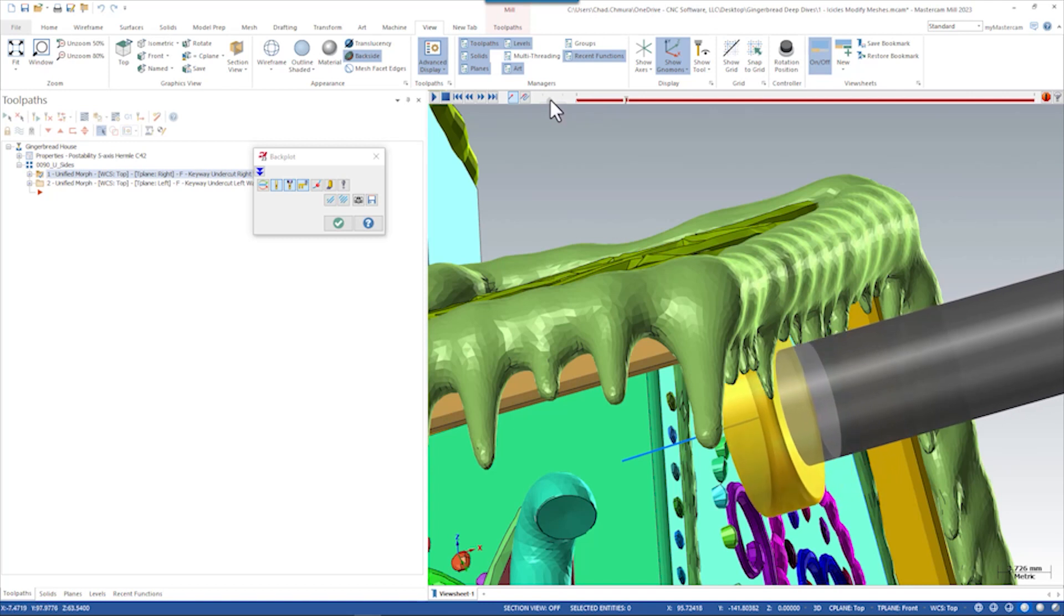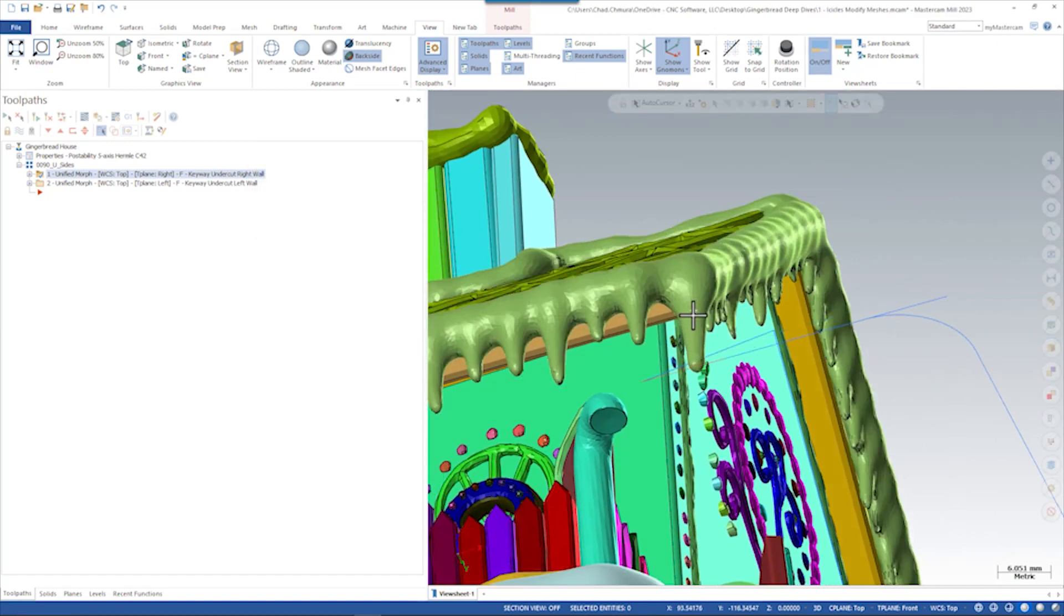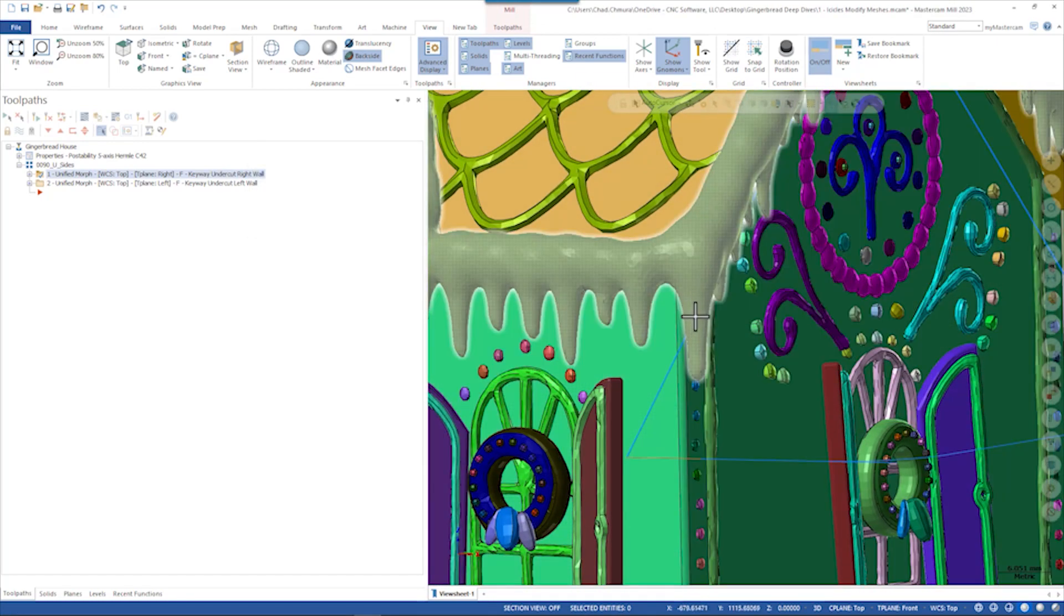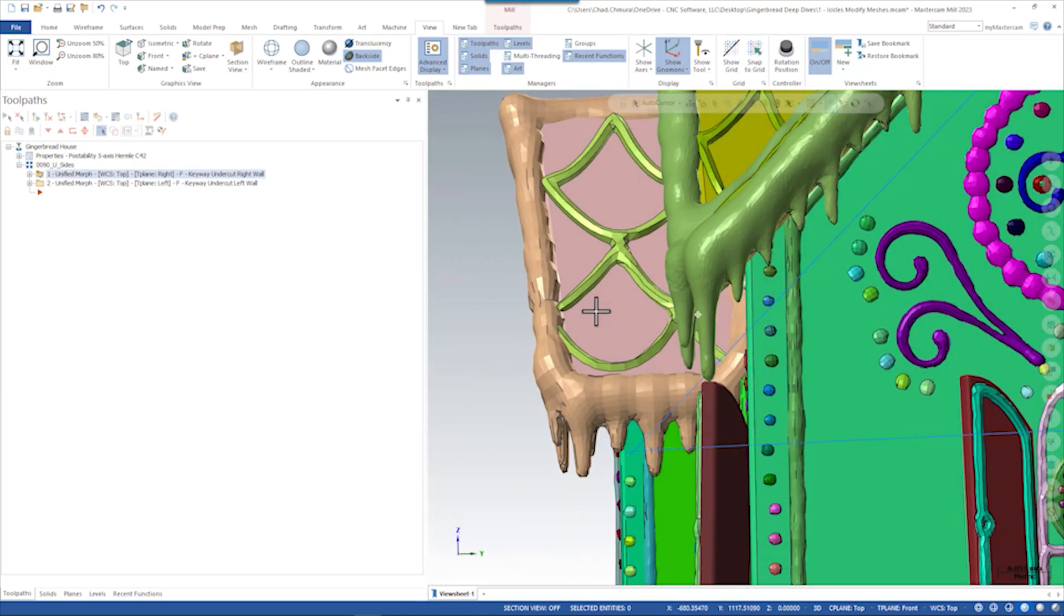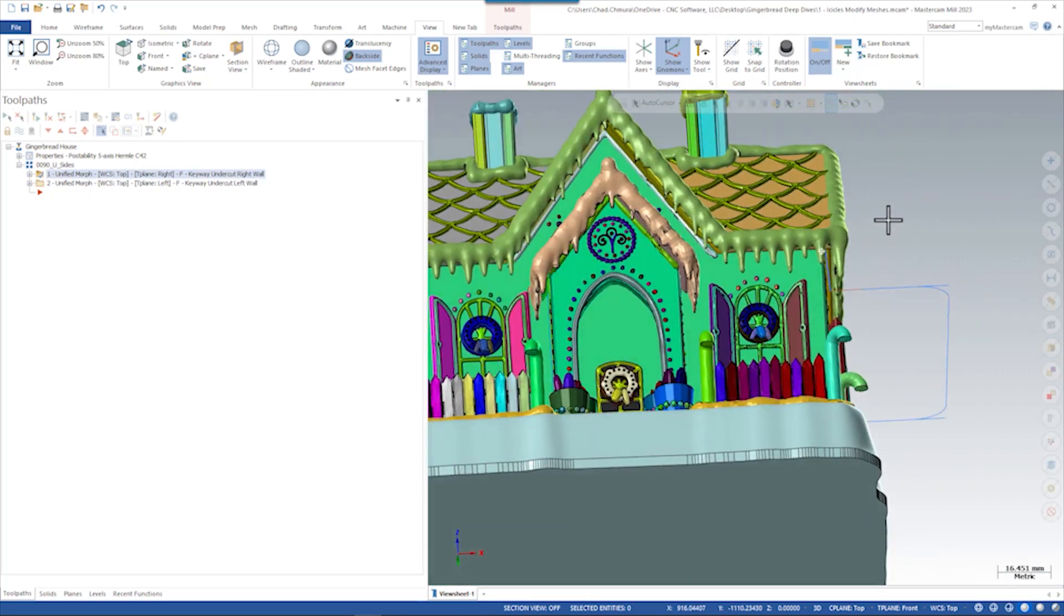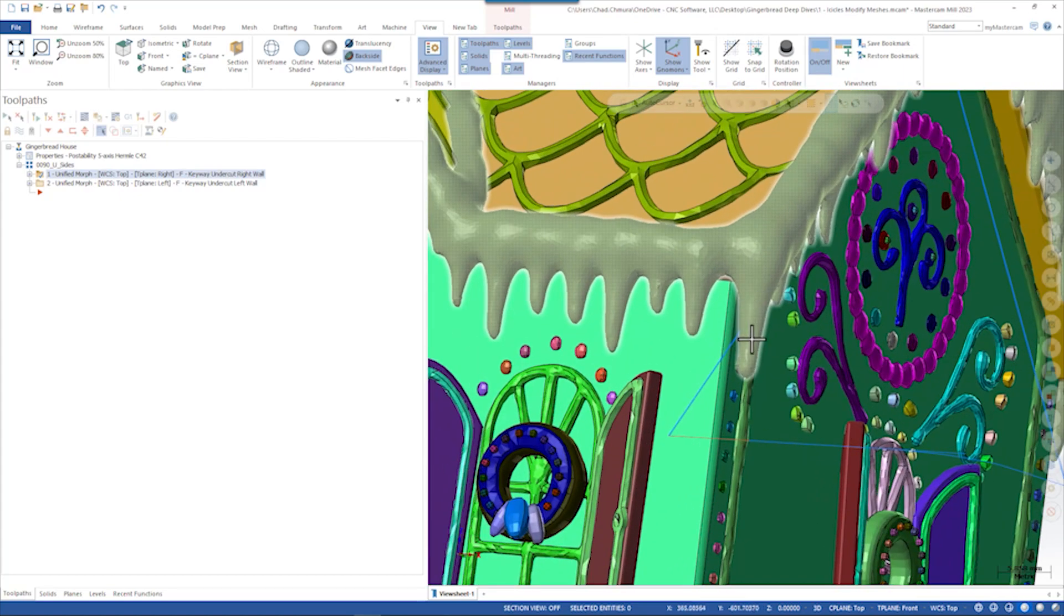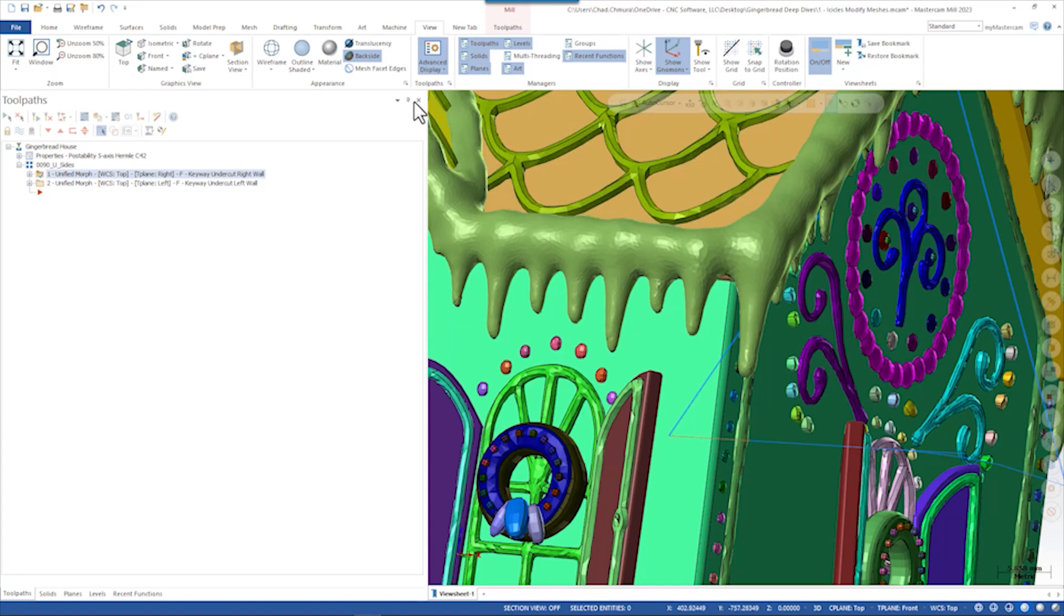You'll note on the actual real part file, these corner icicles don't even exist because these were a problem for this undercut and for the undercut in this orientation. What we had to do on all of these icicles that caused interference was run some extra mesh tools.